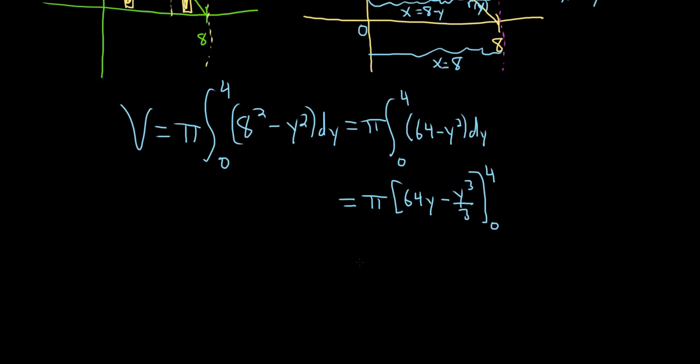All right, so first you plug in the 4, so it's pi, so this is 64 times 4 minus, and then plug in the 4 here. 4 cubed is 64 over 3. And then when you plug in 0, it all goes away. Really nice, because they're all 0's.